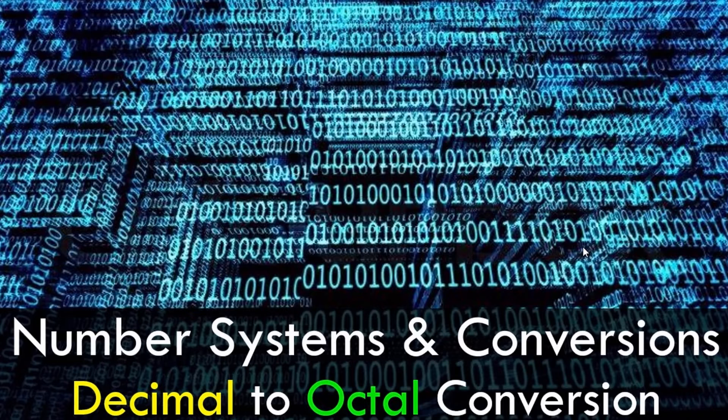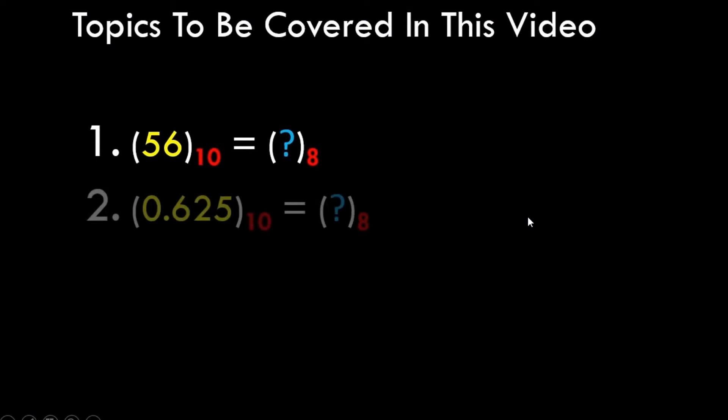In the previous two tutorials we learned how to convert a decimal number to binary and vice versa. So if you want to have a look at it you can check those videos as well. In this tutorial we are going to be solving three sums wherein we will be converting three decimal numbers to octal numbers.